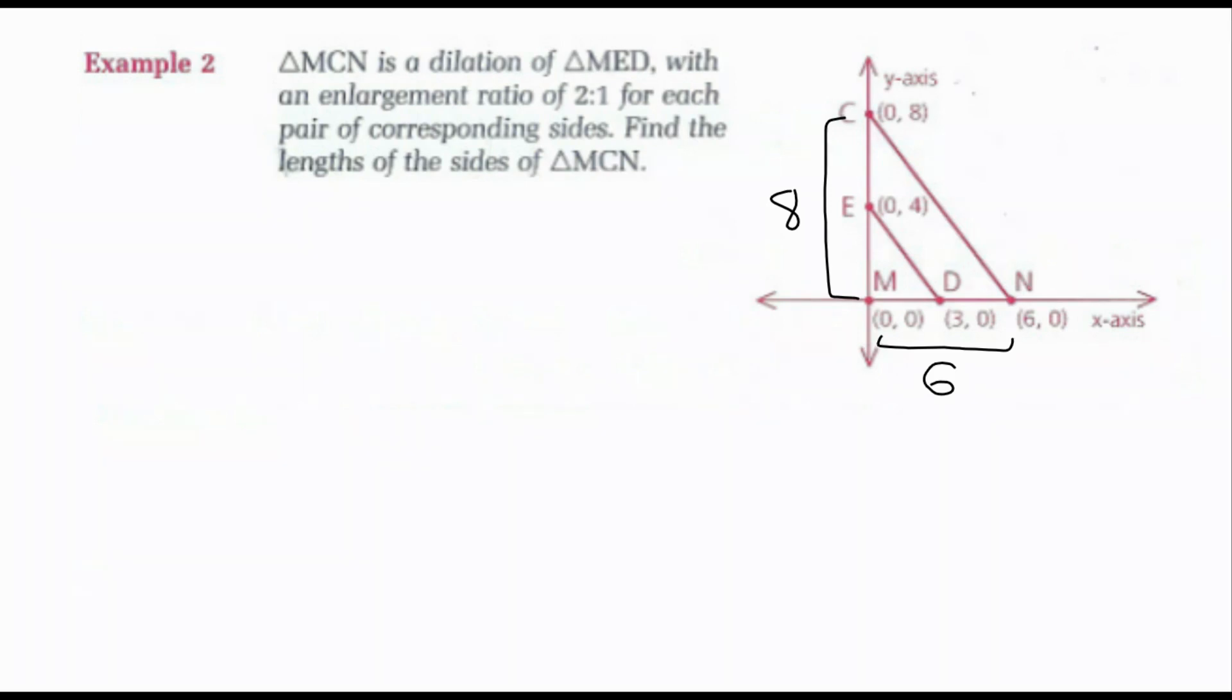Since this is a right triangle, I can use Pythagorean theorem. So 6 squared plus 8 squared would equal CN squared. 6 squared plus 8 squared is 100, so CN squared is 100. I'd take the square root, and CN would be 10. So my side lengths would be 6, 8, and 10.